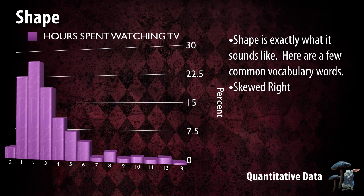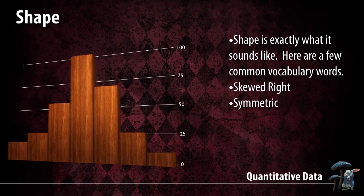You can see that in the picture. Next we have symmetric. Symmetric means it's about the same on the left and the right if you were to cut it in half. Notice in the picture that it's not perfectly symmetric — this is statistics, and we don't deal with perfection here. This is realistic situations. You have approximately the same graph on both sides, so if you cut it in half and folded it over, it would be about the same on both sides. That's symmetric.